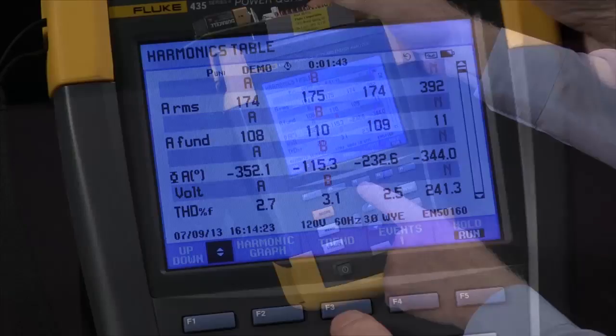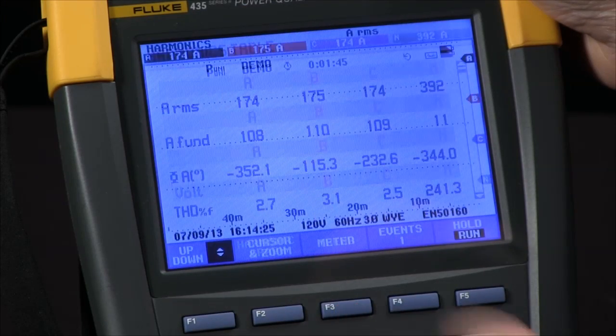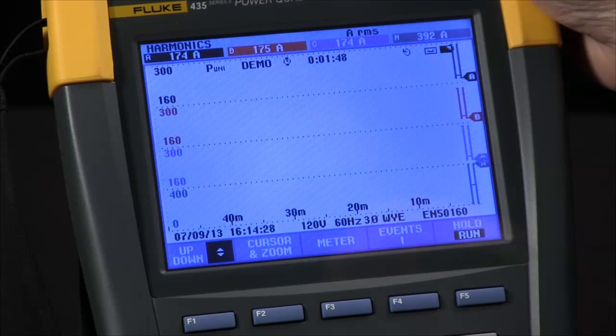I can also look at a trend by hitting the F3 button, and this will show a strip chart type recording.